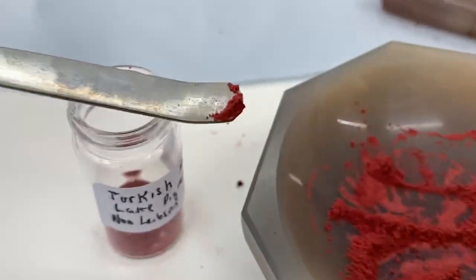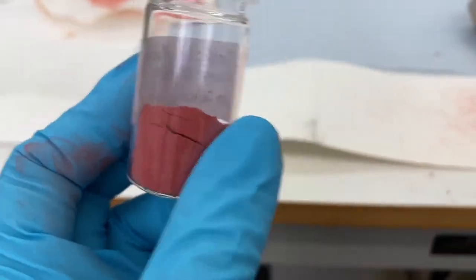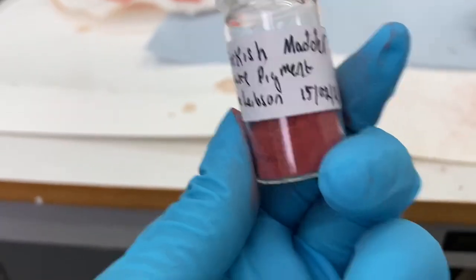The finely ground pigment is added into a vial for future use. For it to be used as the pigment you'd simply need to add it to a binder like oil or egg.